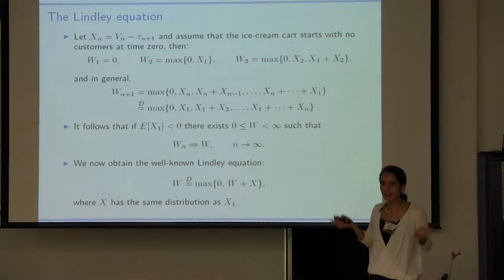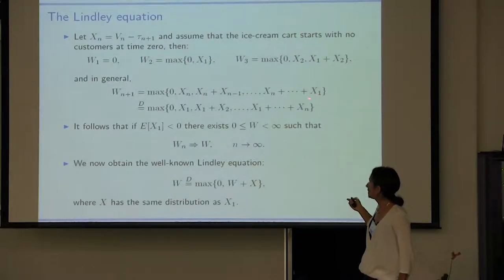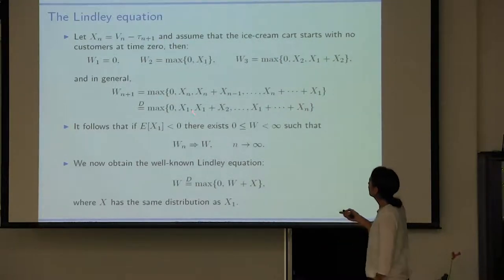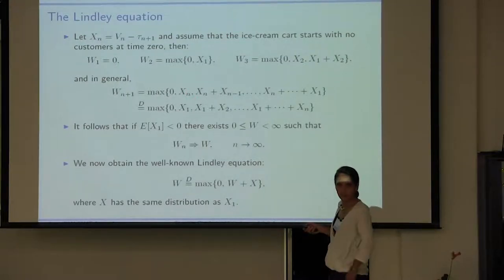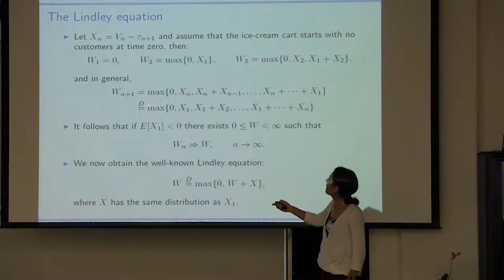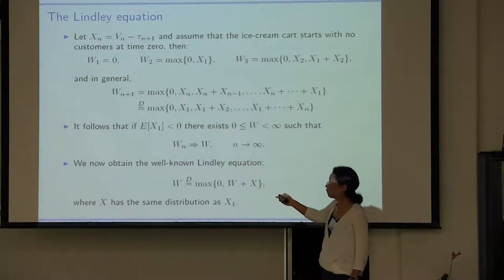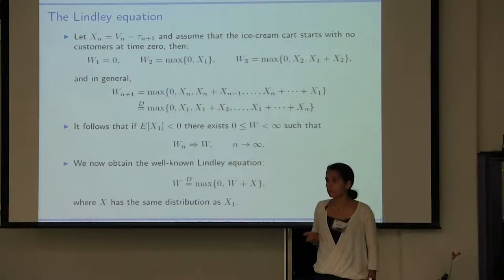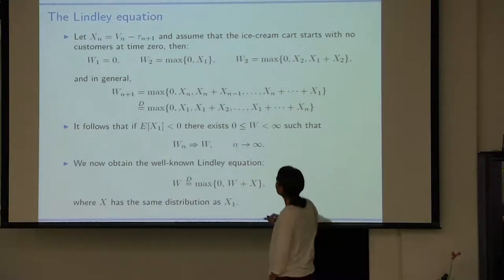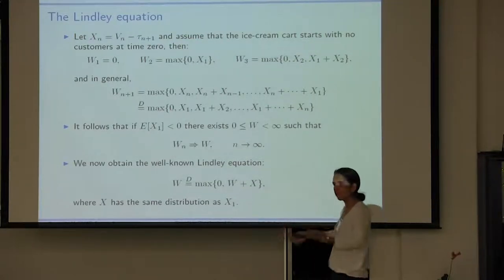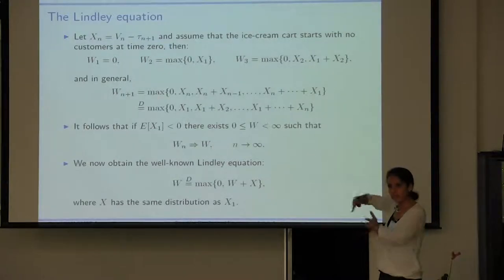Because everything was IID, reversing the indices gives the same distribution. So in distribution — not sample-path-wise, but in distribution — this waiting time has the same distribution as the maximum of zero, of one X, of one plus another, of one plus another plus another, and so forth. You may recognize this object as a random walk. In other words, the waiting time of the (n+1)th customer has the same distribution as the running maximum of the random walk. This is standard queuing theory, taught in the first or second lecture.